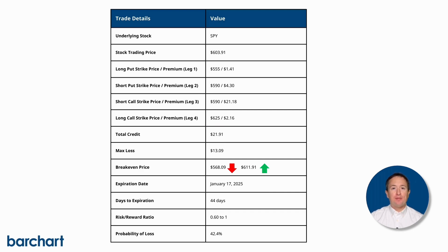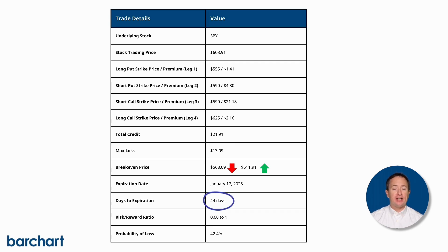The maximum loss on the trade is $13.09 per share, and all options expire on January 17th, which is 44 days until expiration from the time of the screen. The trade also has a 42.4% probability of loss, with a risk-reward ratio of 0.6 to 1.